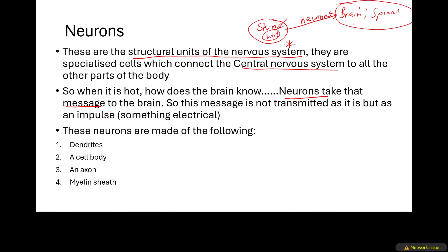Everything is perceived by the brain and spinal cord. Even when you are hearing my voice right now, it is the ears that detect the sound, but the sound is transmitted to the brain so you can recognize it. The eyes see light — that light is the stimulus — and for it to be transferred to the brain it is through neurons. So neurons connect the central nervous system to all other parts of the body: ears, skin, and eyes.